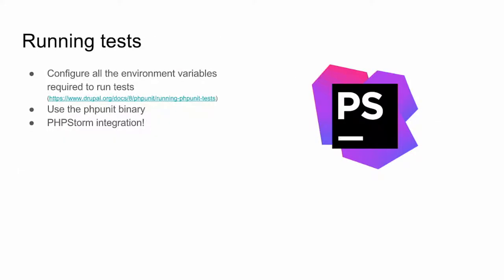Once you're up to speed with testing fundamentals, you'll want to start running those tests. If you're running tests in the context of Drupal, there are environment variables to set up that give the Drupal test access to a database. You can use the PHPUnit binary — if loaded with Composer it'll be in vendor/bin/phpunit. My absolute favorite test runner is PHPStorm, which has fantastic PHPUnit integration. You can right-click on a whole folder or module, run an entire suite, or drill down to specific test methods.